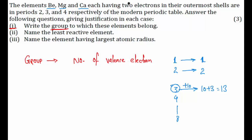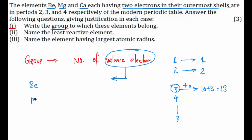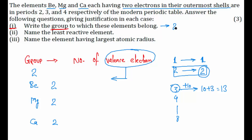Now, beryllium, magnesium, and calcium each have two electrons in their outermost shell. Valence electrons are defined as the electrons in the outermost shell. So each of these three elements has two valence electrons, and since the number of valence electrons is two, all three elements belong to group number 2.